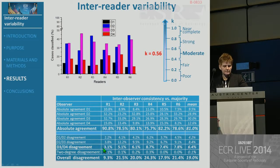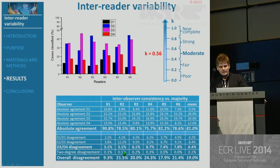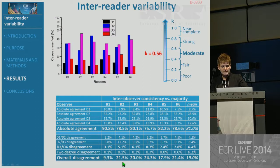If you focus on the disagreement, you see that most disagreements are for adjacent categories — between BI-RADS D1 and D2, D2 and D3, D3 and D4. Two-category disagreements are very rare. So overall disagreement ranges from 10% up to about 24%.